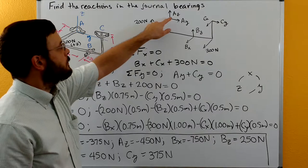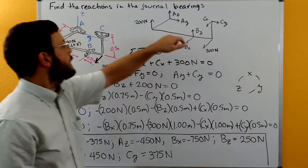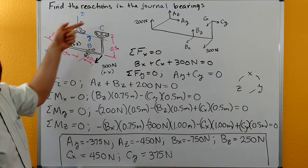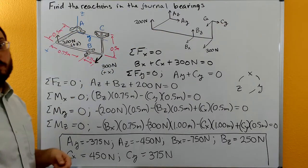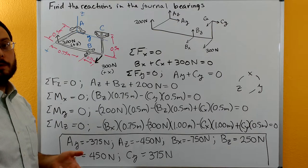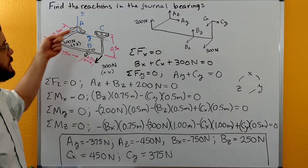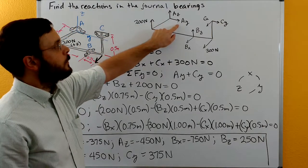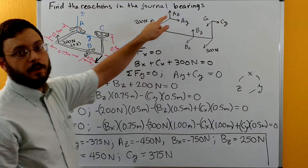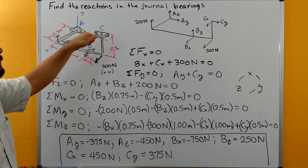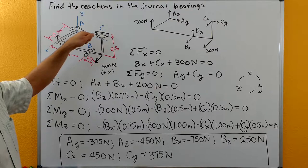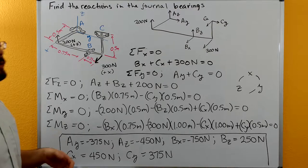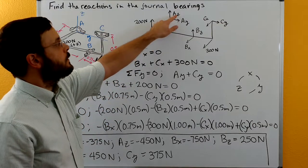Drawing our free body diagram, for journal bearing at A we can translate the rod through the bearing in the x direction. Remember, journal bearings don't exert a thrust on the shaft, so there's nothing to prevent the shaft from going through the bearing in x. But we will have an AY and an AZ — the journal bearing resists movement in y and z.